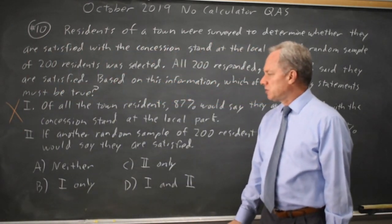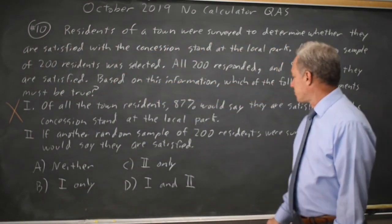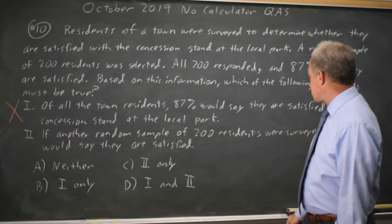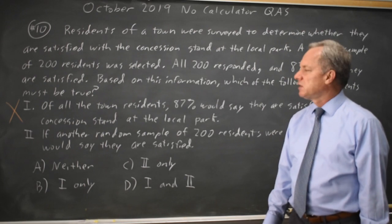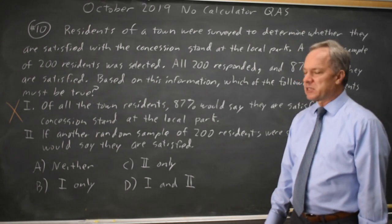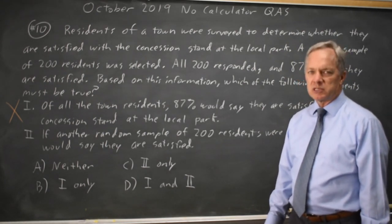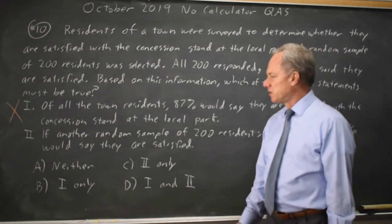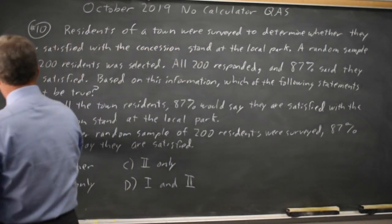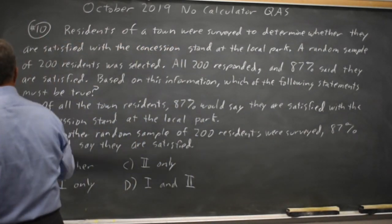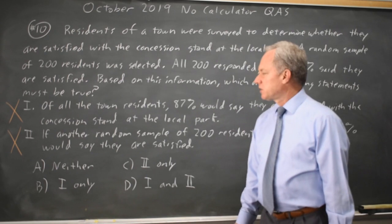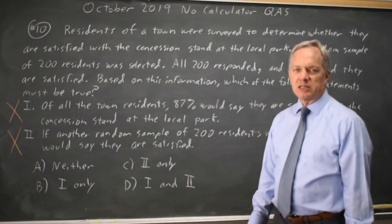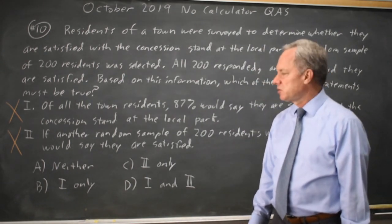Choice two: if another random sample of 200 residents were surveyed, 87% would say they are satisfied. We would expect a second random sample to produce similar results, and it is likely that the results would be close, but you cannot conclude that they would be exactly the same. So choice two is wrong.